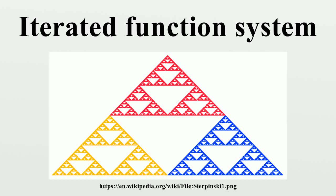Although the theory of IFS requires each function to be contractive, in practice software that implements IFS only requires that the whole system be contractive on average. The diagram shows the construction of an IFS from two affine functions. The functions are represented by their effect on the bi-unit square. The combination of the two functions forms the Hutchinson operator. Three iterations of the operator are shown, and then the final image of the fixed point — the final fractal.